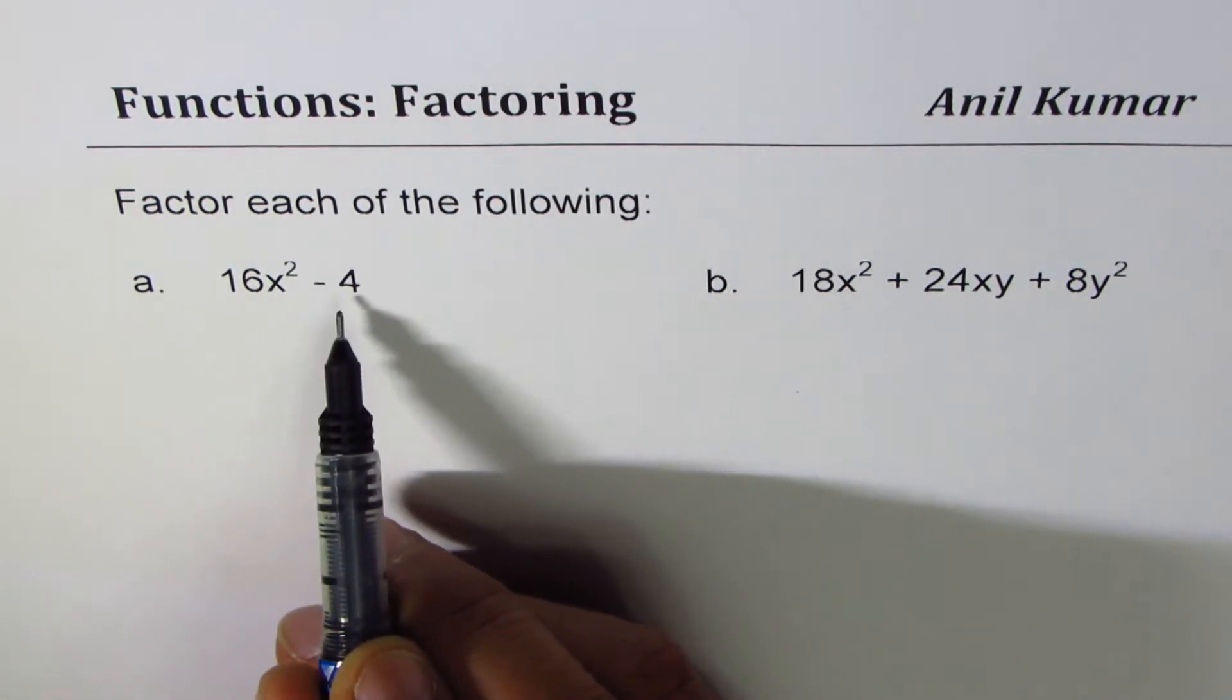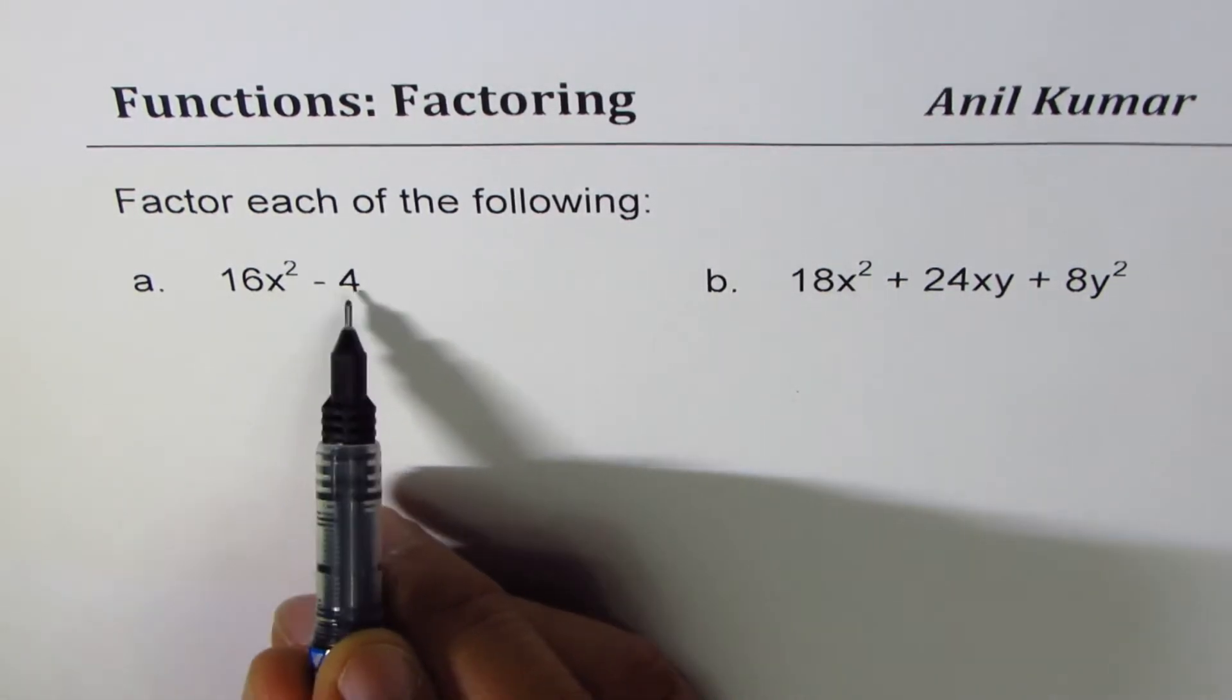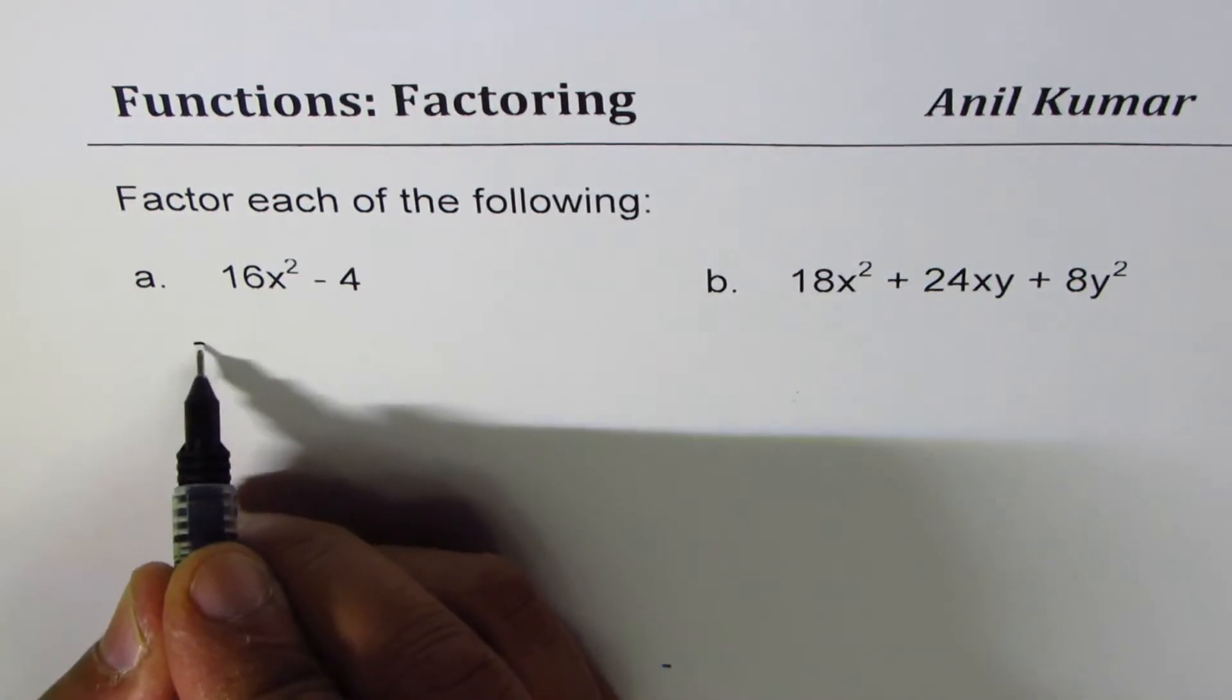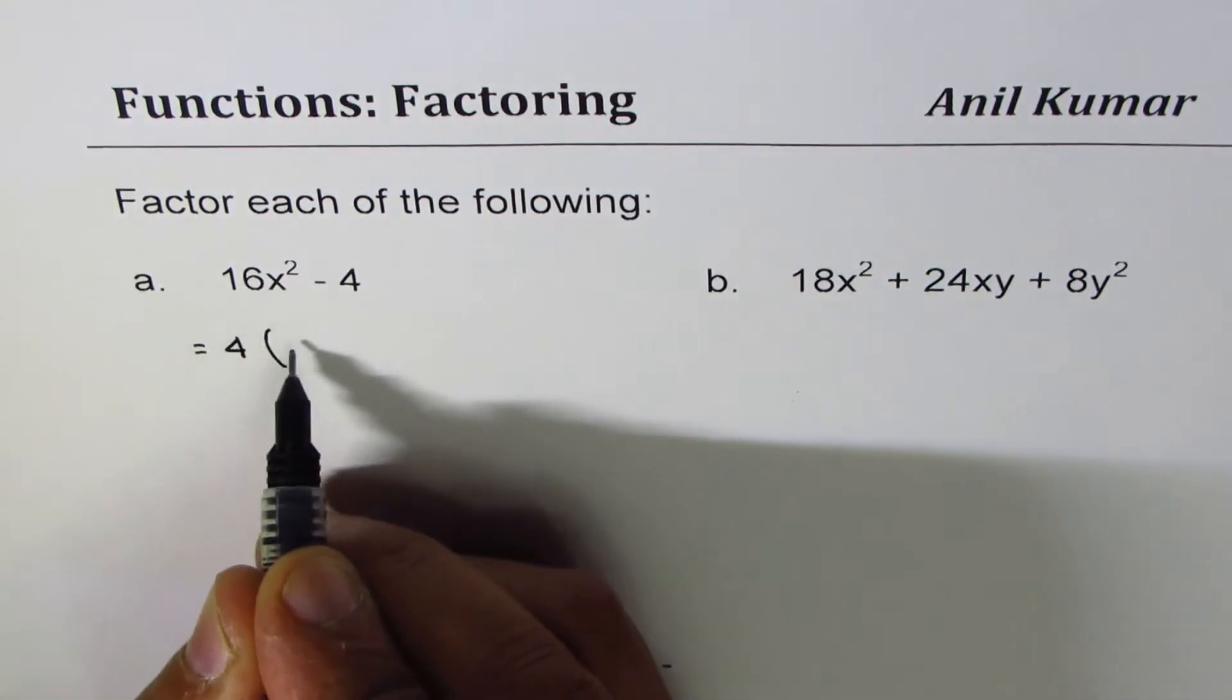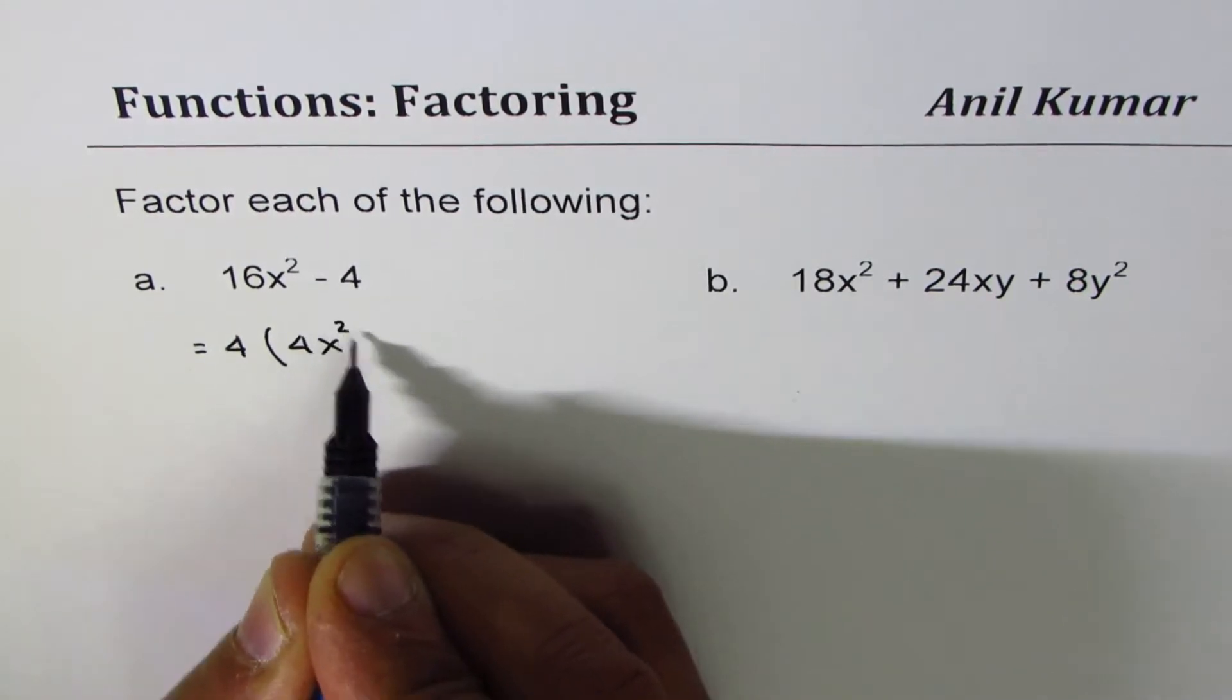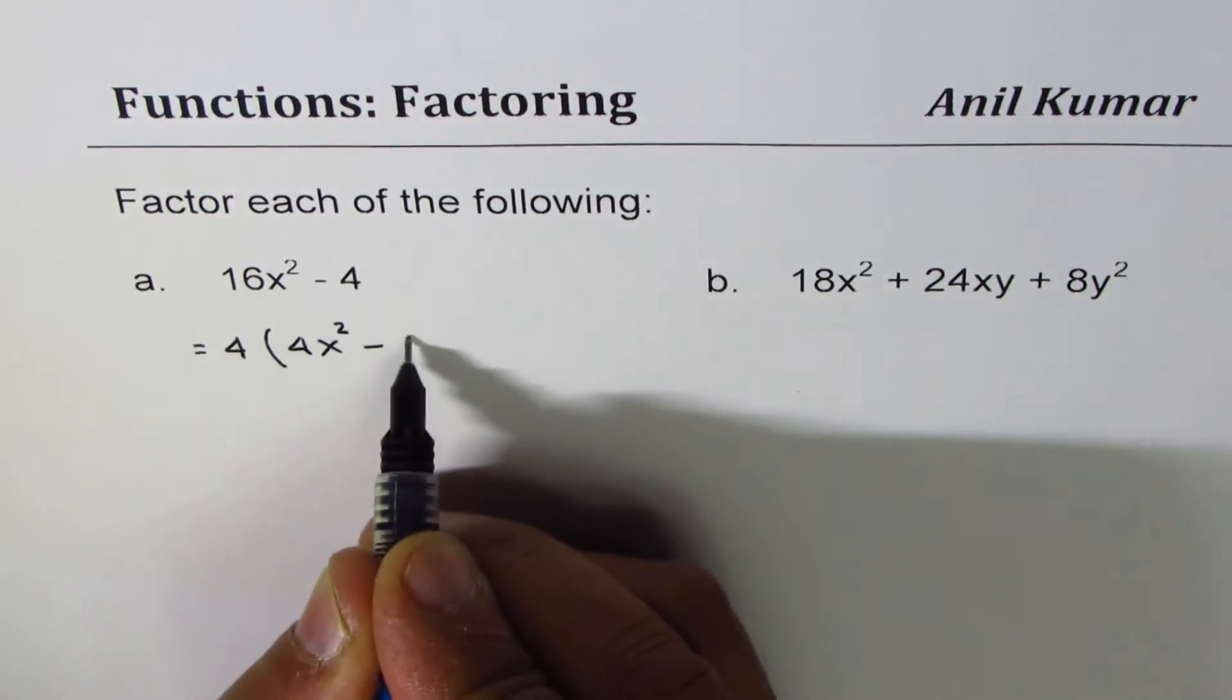16x² - 4. First we can factor out 4. So if we do that we get 4. Dividing 16x² by 4 we get 4x², and -4 divided by 4 is -1.